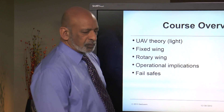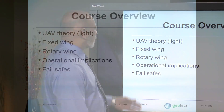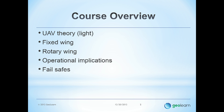In this course, we will talk about some of the theory relating to how UAVs or UASs are kept in the air. We'll refer to that with respect to fixed-wing as well as rotary-wing aircraft, and we'll talk about some of the operational implications as we go through both of those. And then we'll talk about what are known as fail-safes.